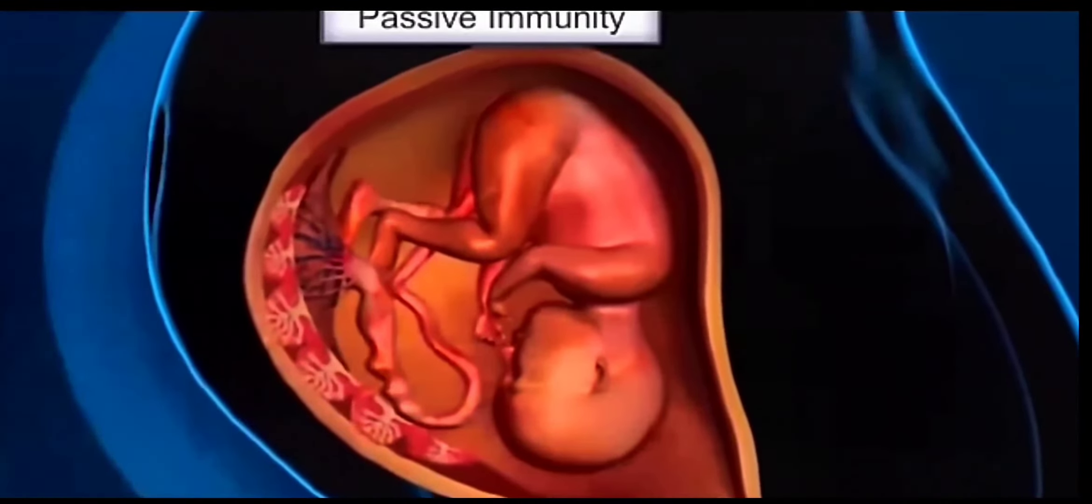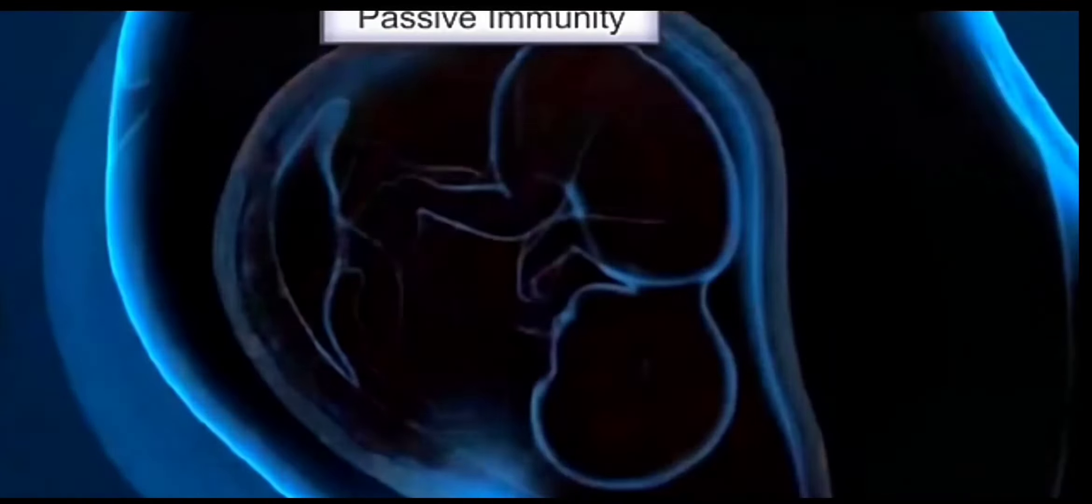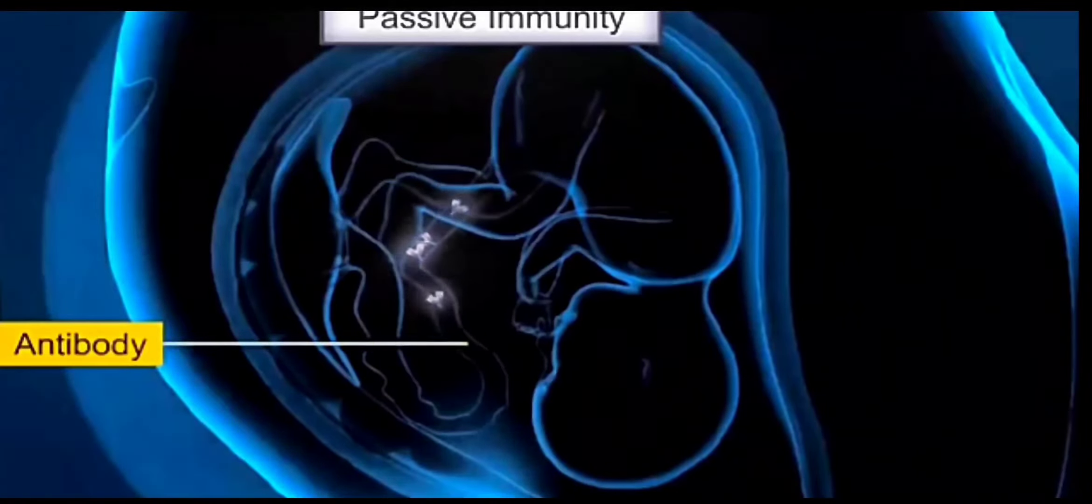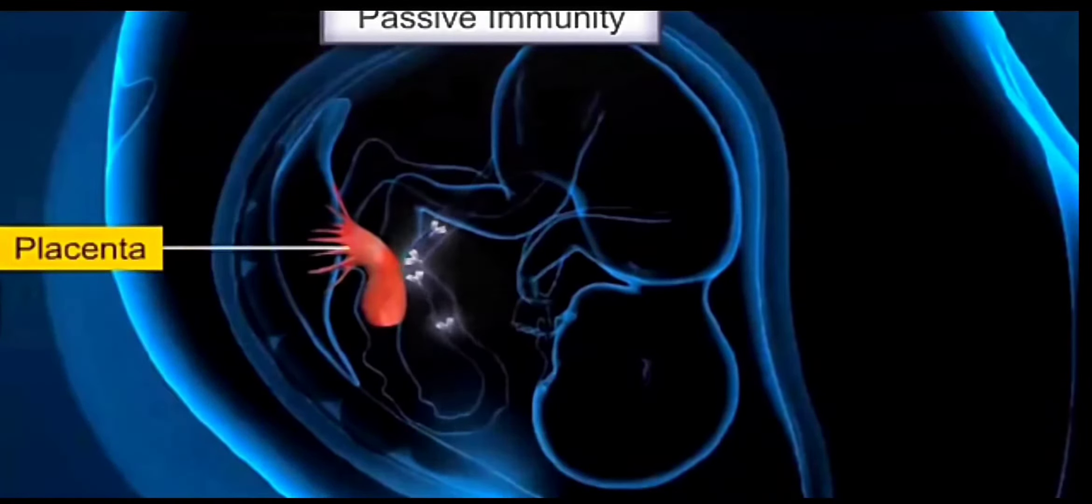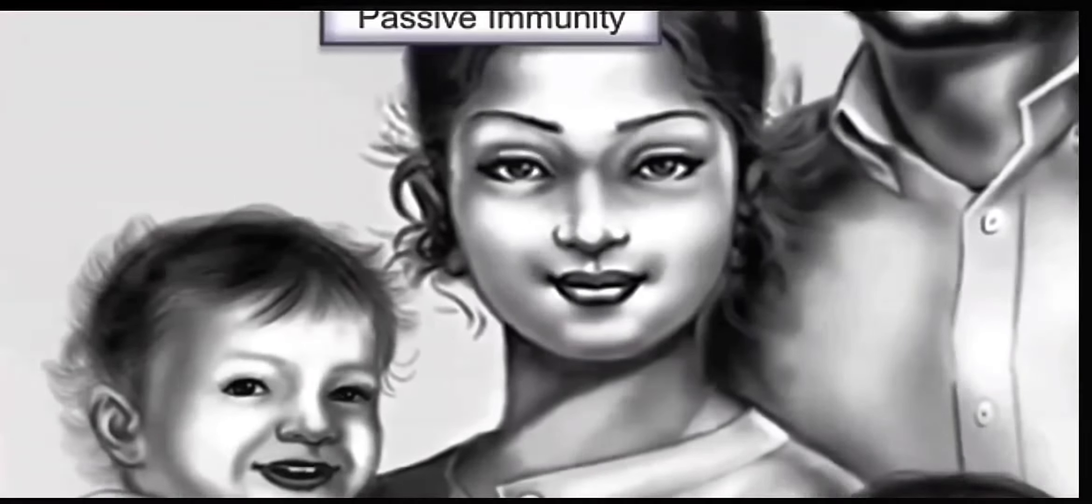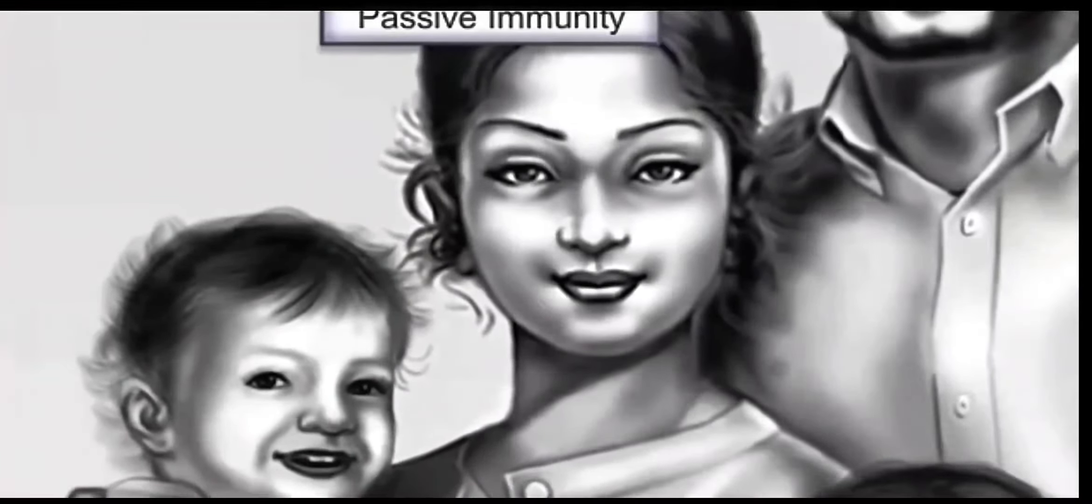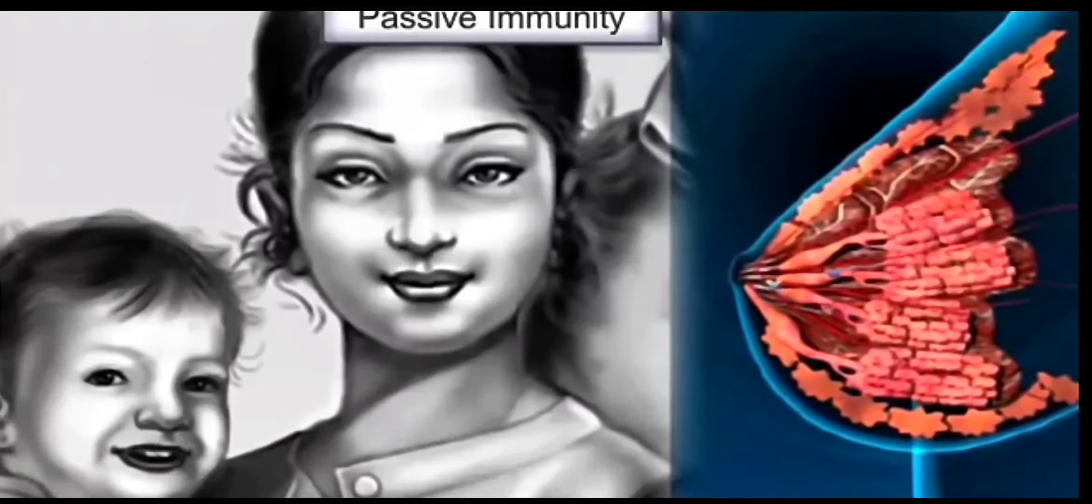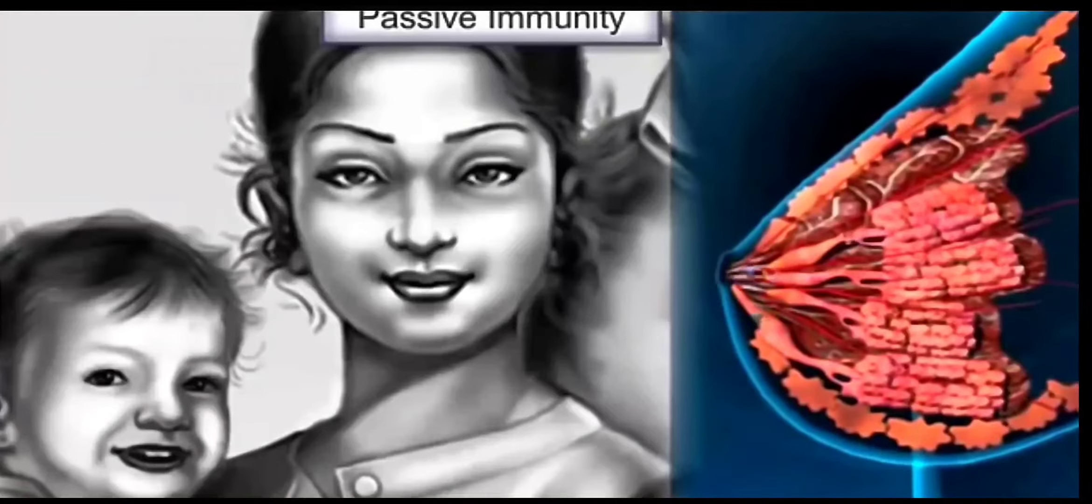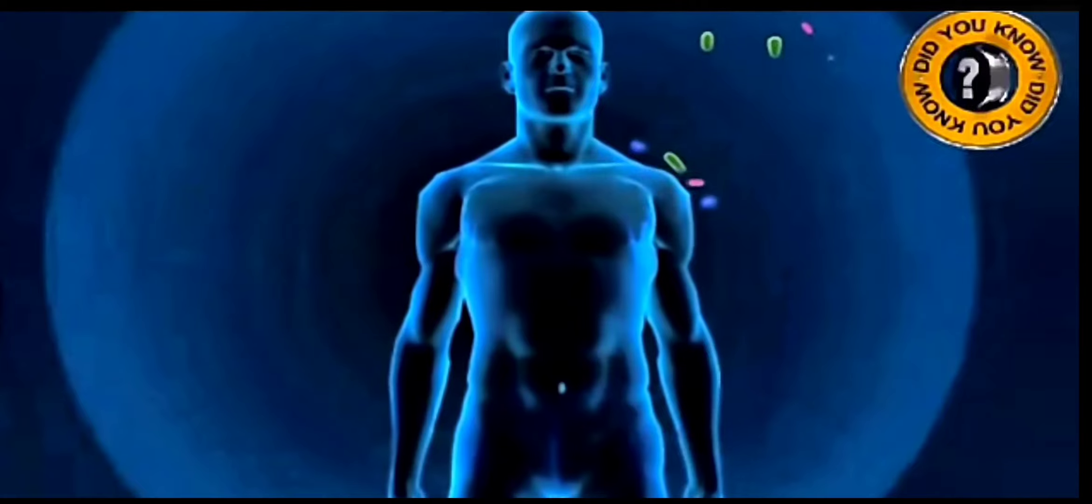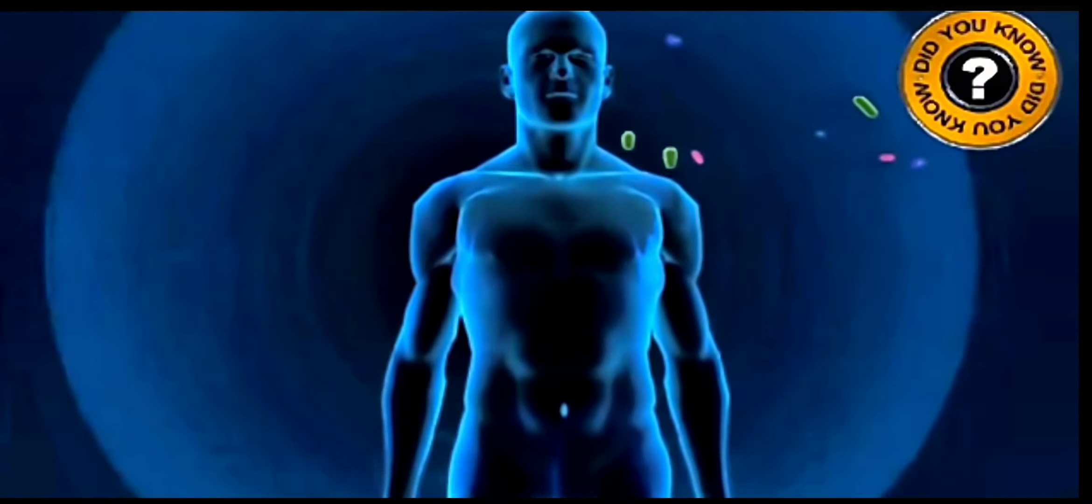Whereas in passive immunity, it is that immunity where our body gets the prepared antibody. It does not produce the antibodies. For example, in case of a fetus, it gets the antibodies from the placenta. Or after childbirth, the child is fed on mother's milk. I told you in a previous chapter that is called colostrum. That colostrum is very nutritious because it has the prepared antibodies, basically IgA, which protects the child against infection. So the child is getting the prepared antibodies. That's why it is called passive immunity.